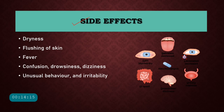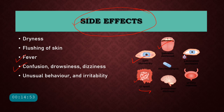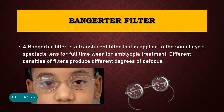The side effects of pharmacological penalization with atropine include dryness of the mouth, decreased lacrimation, blurring of vision, dryness of the eye, fever, and gastrointestinal upset. Atropine can also affect the central nervous system, causing confusion, drowsiness, dizziness, unusual behavior, and irritability. These side effects limit the use of pharmacological penalization.